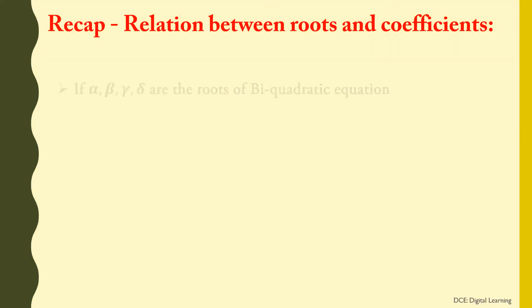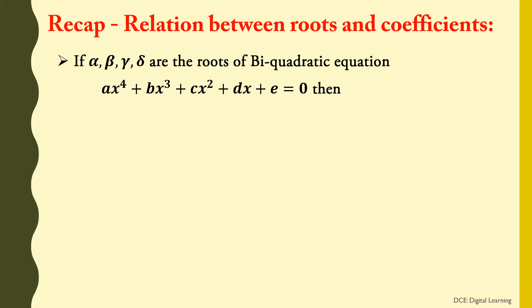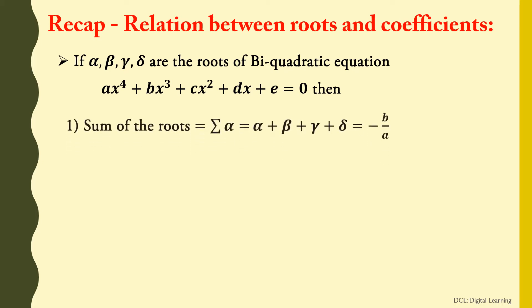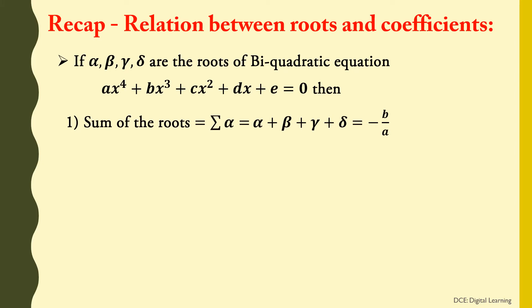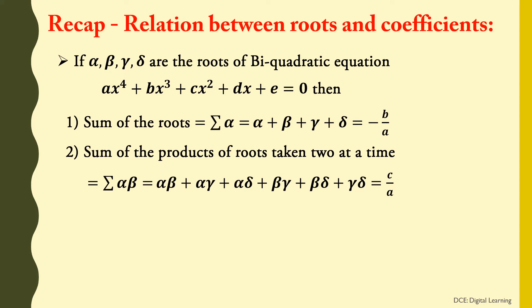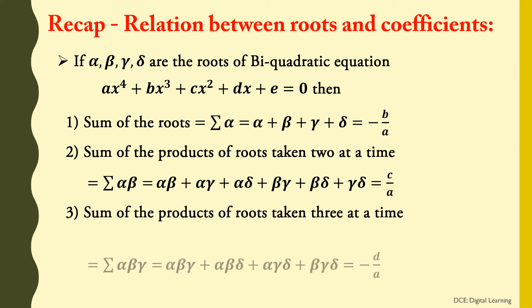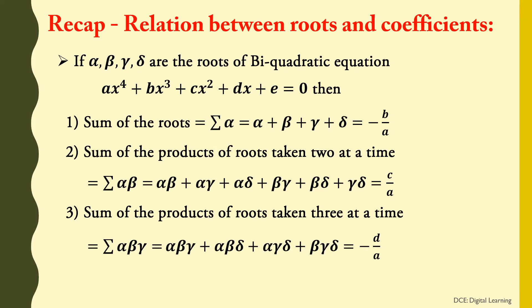Similarly, if alpha, beta, gamma, delta are the roots of the equation AX⁴ + BX³ + CX² + DX + E = 0, then sum of the roots = sigma alpha = alpha + beta + gamma + delta = −B/A. Sum of products taken two at a time = sigma alpha·beta = C/A. Sum of products taken three at a time = sigma alpha·beta·gamma = −D/A. Product of the roots = alpha·beta·gamma·delta = E/A.